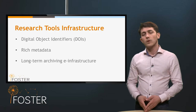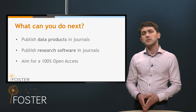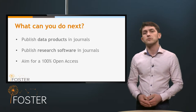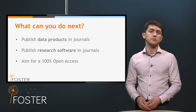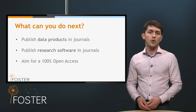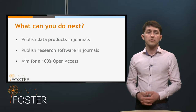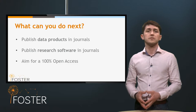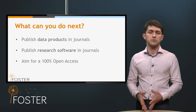Once you're ready to publish your research, dissemination can be optimized through one of two open access routes: open access journals, or if none exist in your disciplines, through open access repositories.